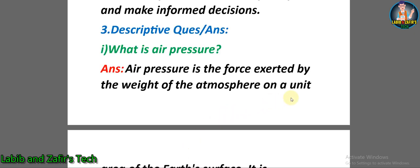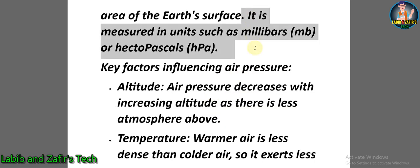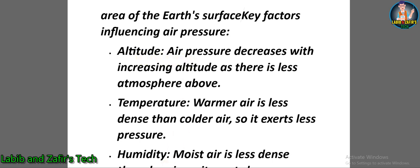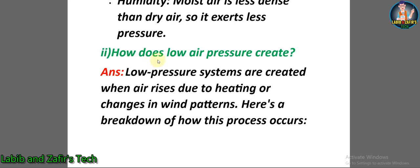Descriptive question number one: What is air pressure? Answer: Air pressure is the force exerted by the weight of the atmosphere on a unit area of the Earth's surface. It is measured in units such as millibars or hectopascals. Air pressure decreases with increasing altitude as there is less atmosphere above. Warmer air is less dense than colder air, so it exerts less pressure.